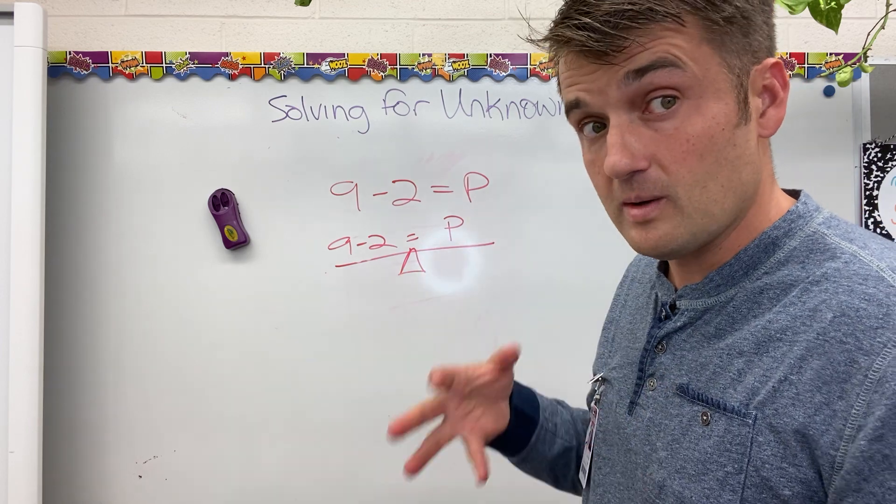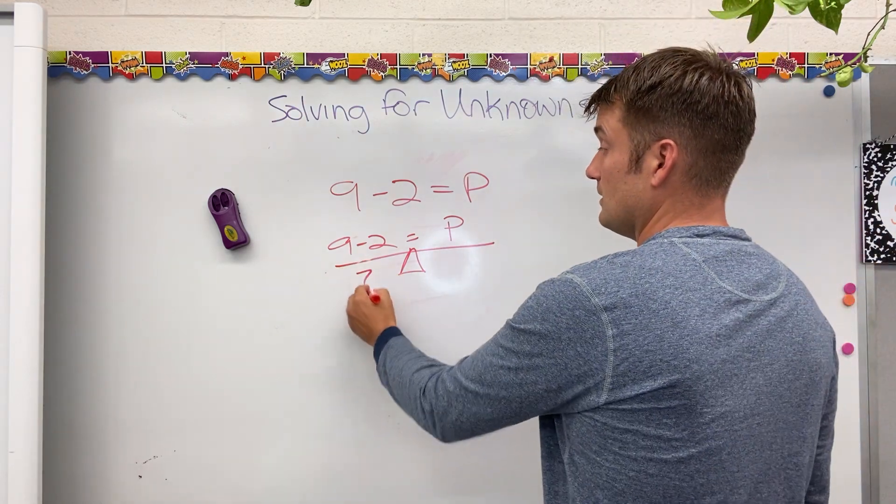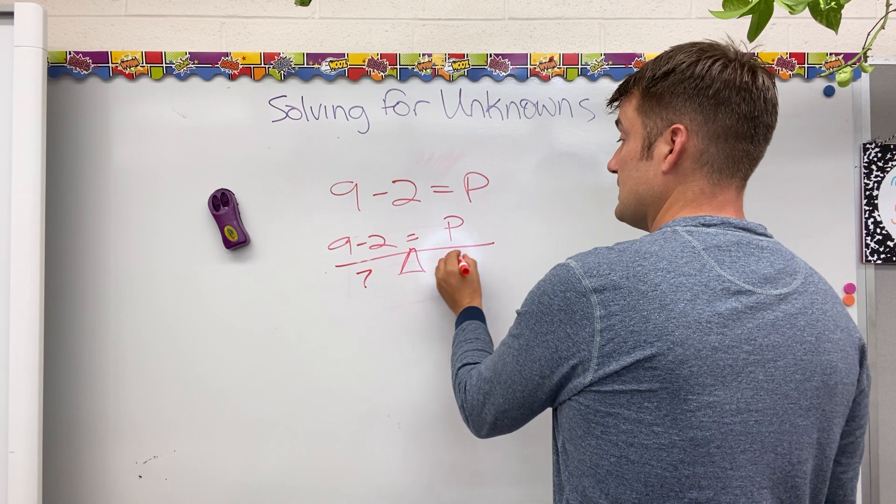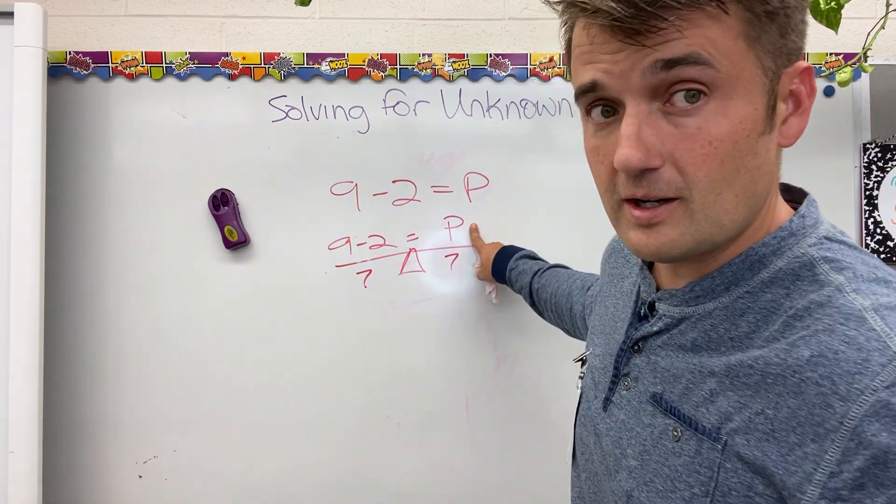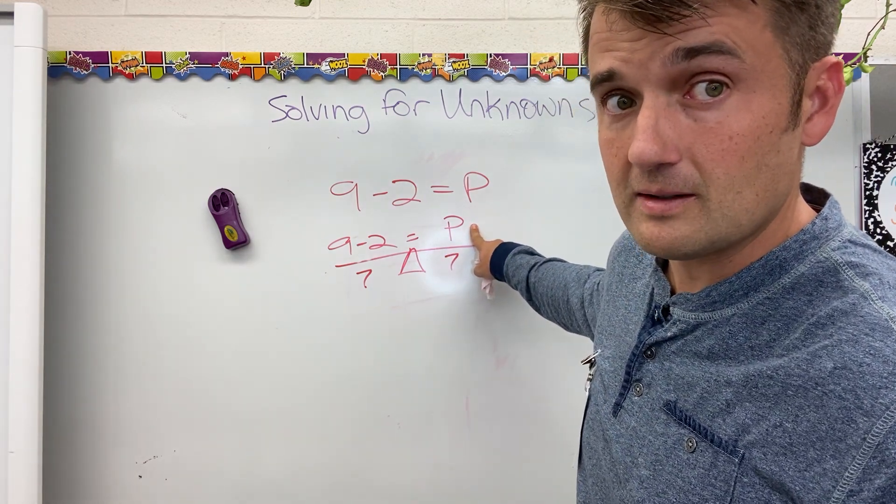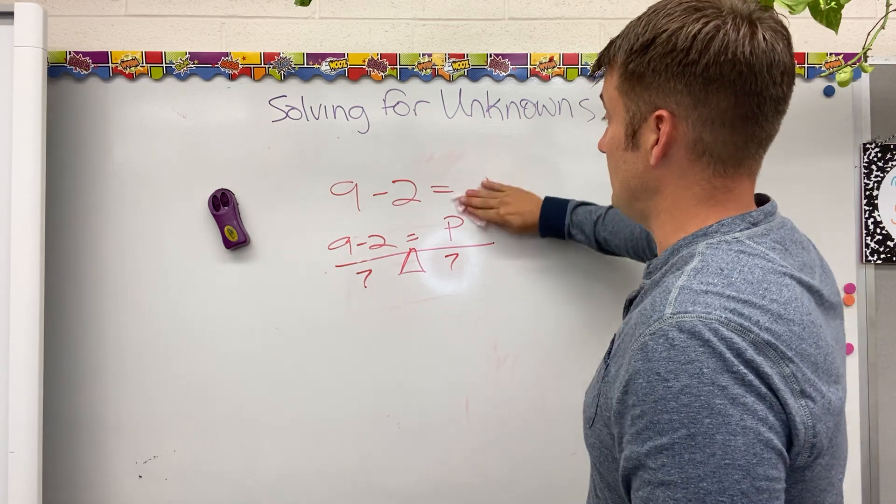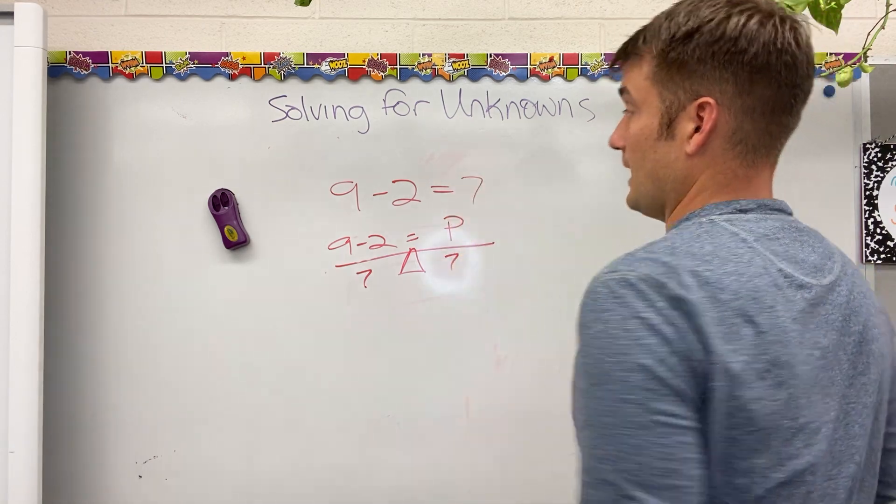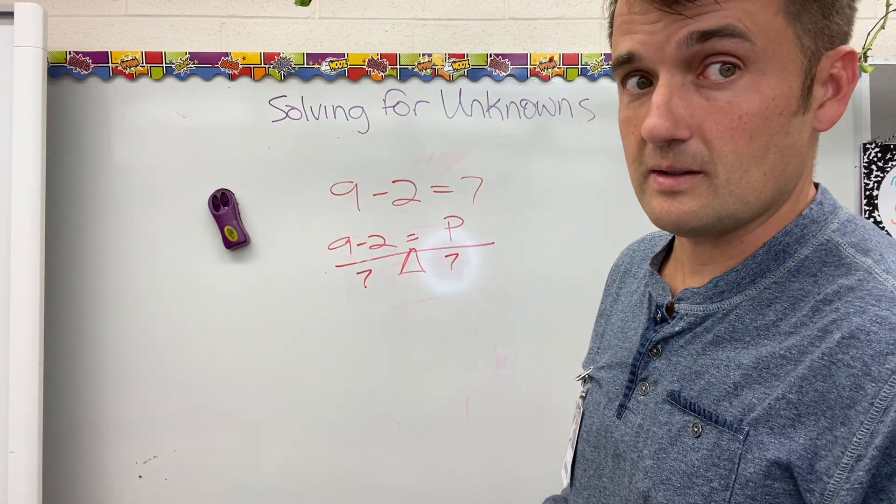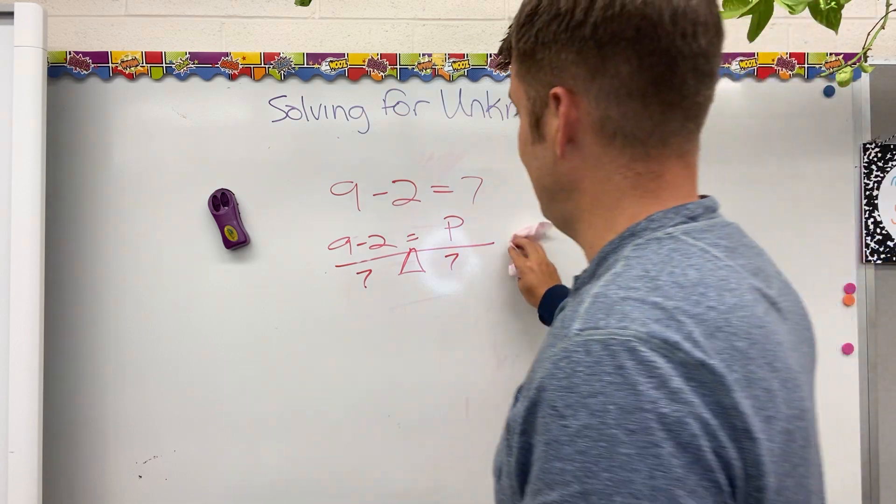9 minus 2 is 7. If this side is 7, this side is 7. The only thing that's over here is P. So, P must be 7. If I go up here and plug it in, 9 minus 2 does, in fact, equal 7. That's a good sign. Parts and a whole.